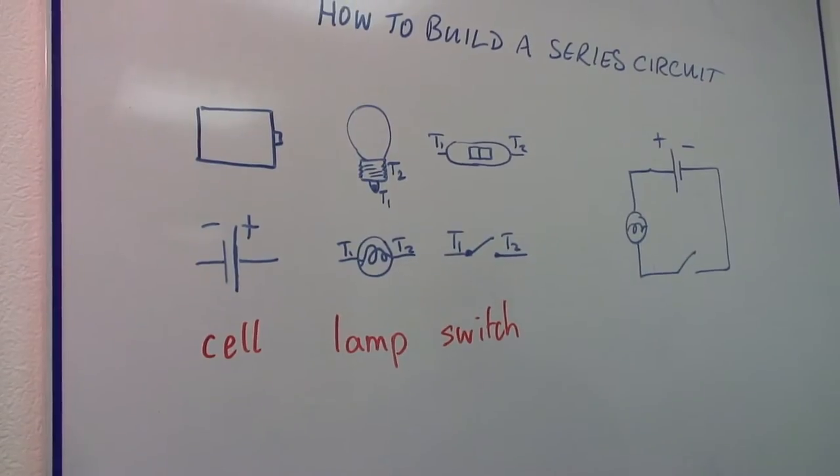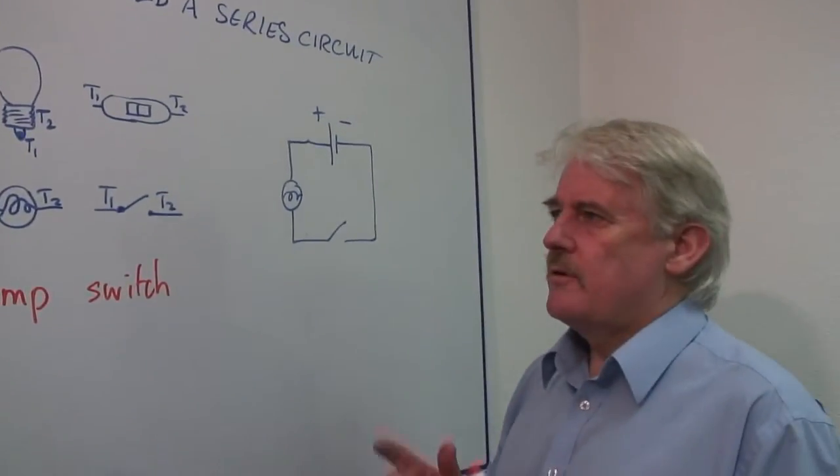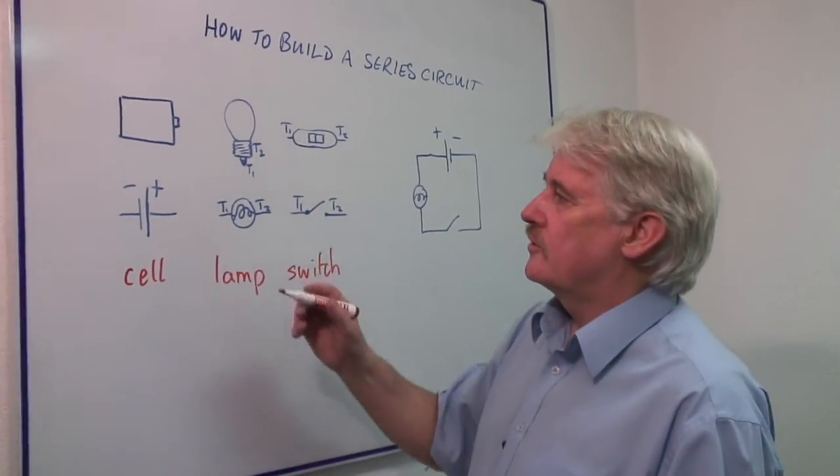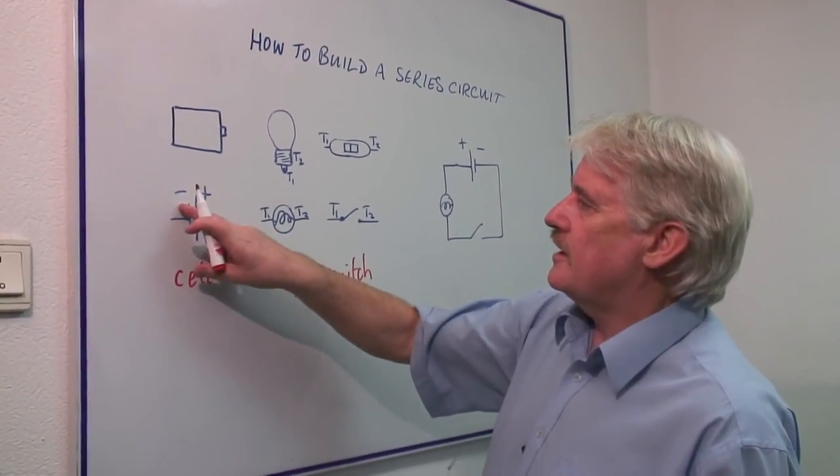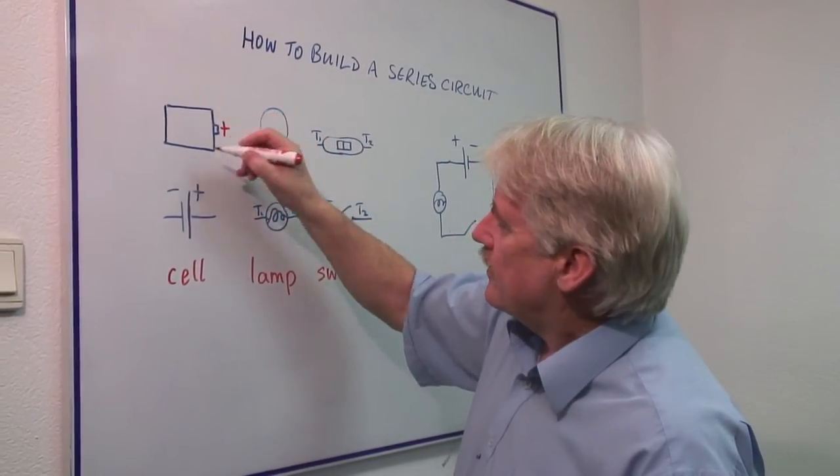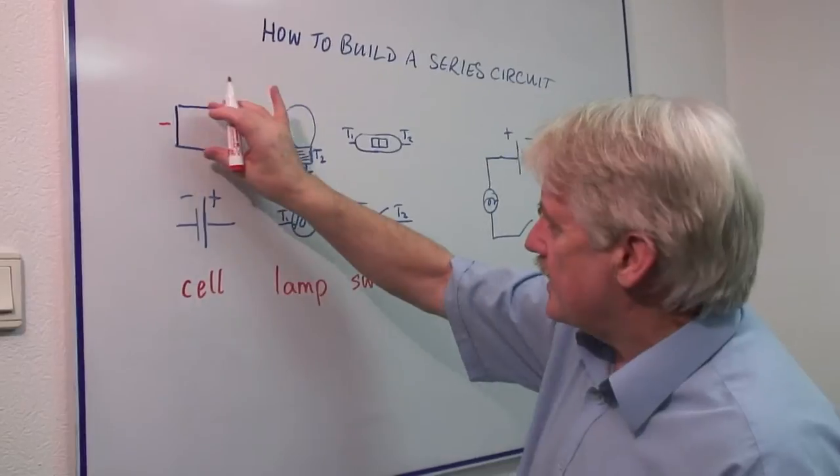Now a series circuit is quite simple. Remember that on every component there are two terminals. Here you've got a positive and a negative one on the cell. This actually is the positive and this is the negative. The case is negative.